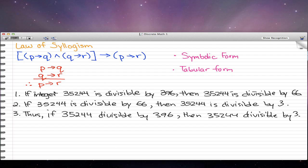The example here is if integer 35,244 is divisible by 396, then 35,244 is divisible by 66. So this would be our P, and that would be our Q. And if 35,244 is divisible by 66, our Q, then 35,244 is divisible by 3, which is R.